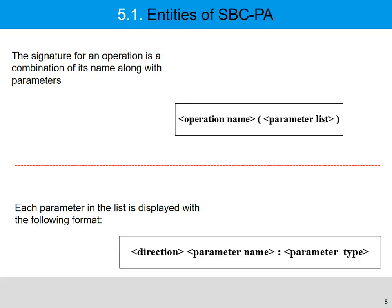The signature for an operation is a combination of its name along with its parameters. Each parameter in the list is displayed with direction, parameter name, and parameter type.